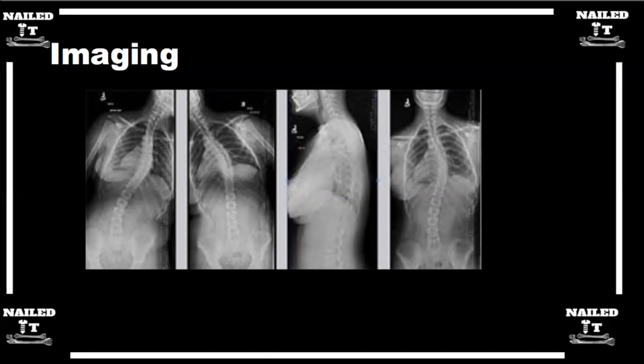But the bending films really are useful when you're doing pre-surgical planning. The only time I get it is when I'm trying to figure out what I'm going to do for surgery. The reason it's important is because number one, it helps you plan for surgery where I'm going to stop if I'm going to put in implants. Number two, to help classify it.